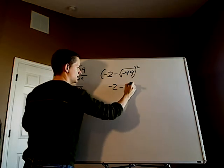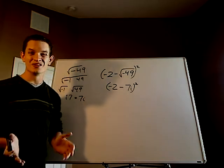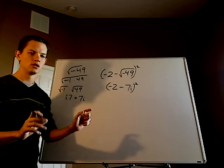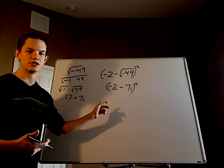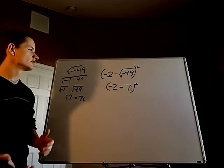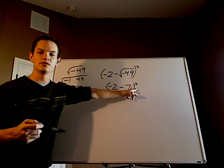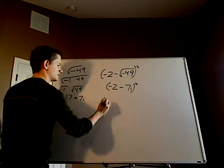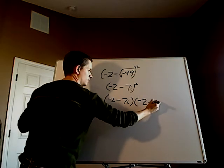So you have negative 2 minus 7i, and that whole thing is squared. Now, a thing you can do is use a perfect square formula. But let's say you don't remember what a perfect square is — you would just simply expand it and then FOIL. This square indicates the thing written twice: negative 2 minus 7i, times negative 2 minus 7i.